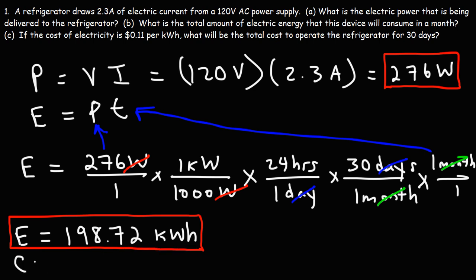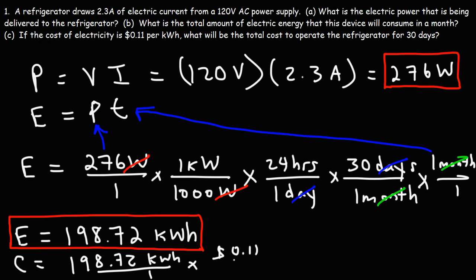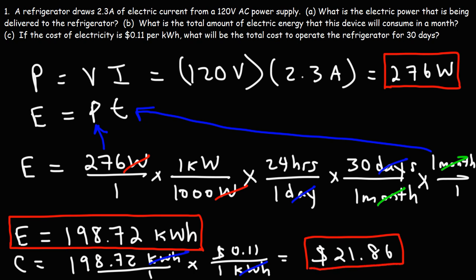Moving on to part C, we want to calculate the cost. All we need to do is multiply the energy by the cost per kilowatt hour. So 198.72 kilowatt hours times 11 cents per kilowatt hour — the unit kilowatt hours cancels — giving us the total cost for electricity consumed by the refrigerator in a month: $21.86. That is the total cost for running this refrigerator in a month, if the cost of electricity is 11 cents per kilowatt hour.